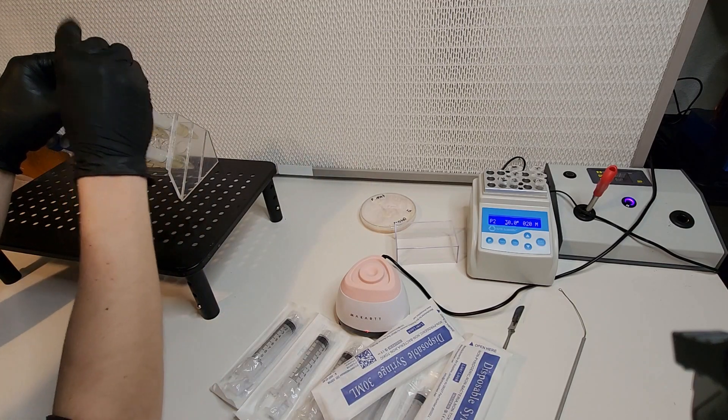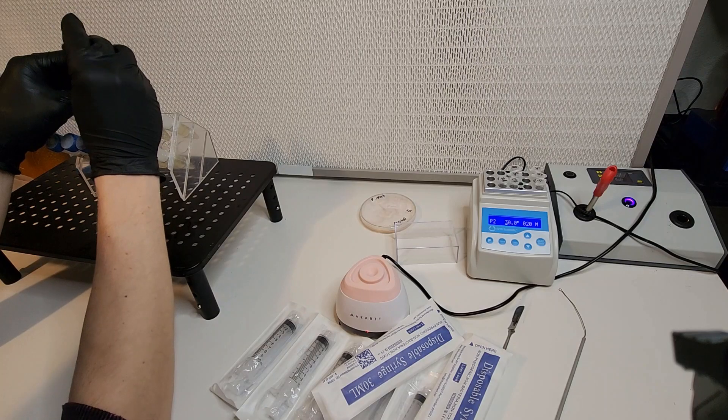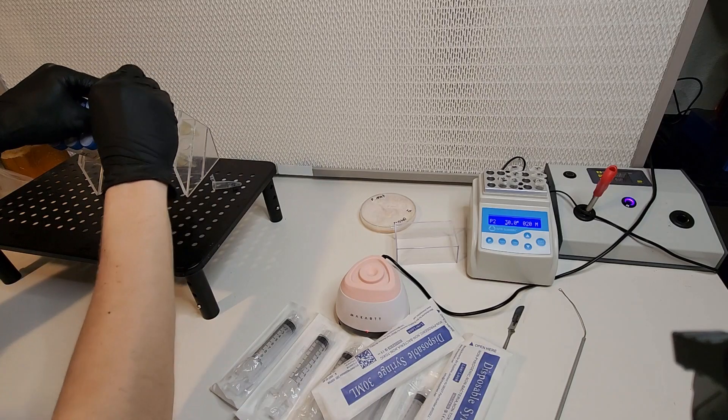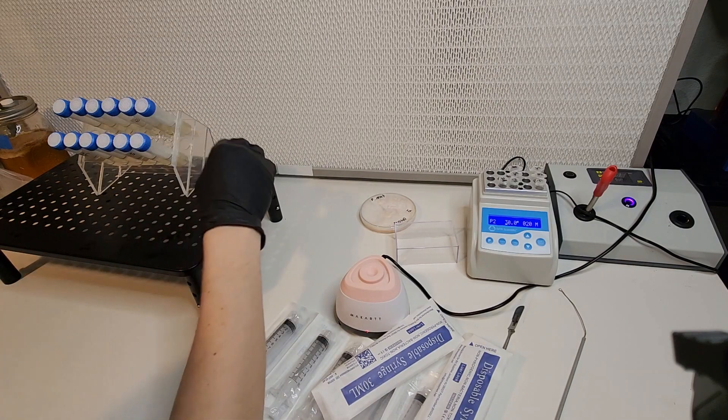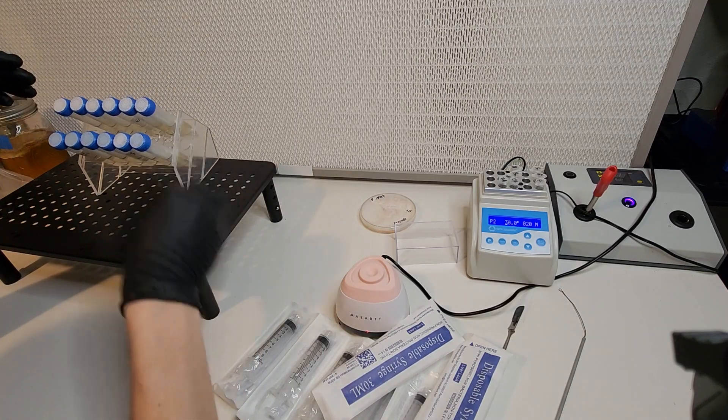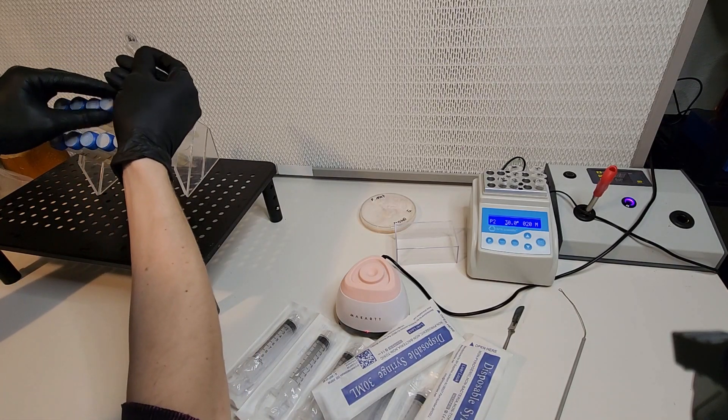After the 90 second heat shock phase, you let it cool down and then dump your tubes into the bioreaction tubes. So you take the little microcentrifuge tube with your sample, open it up, take your bioreaction tube, open it up, and dump it in there.